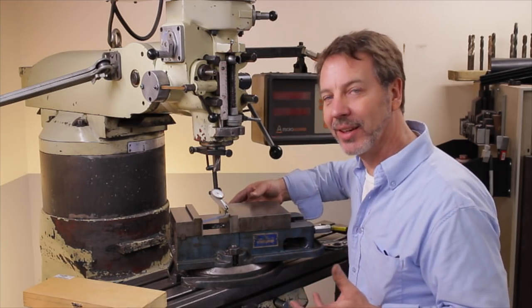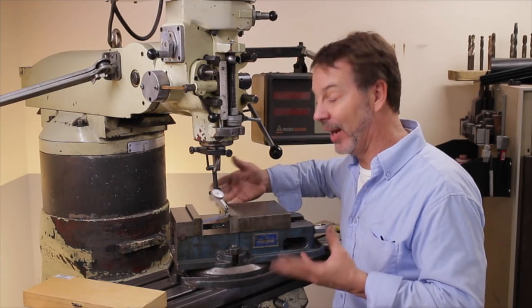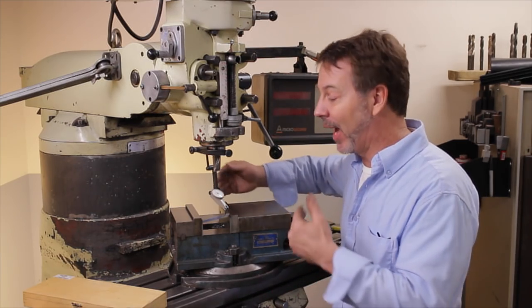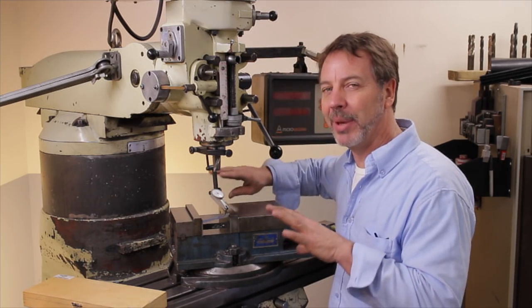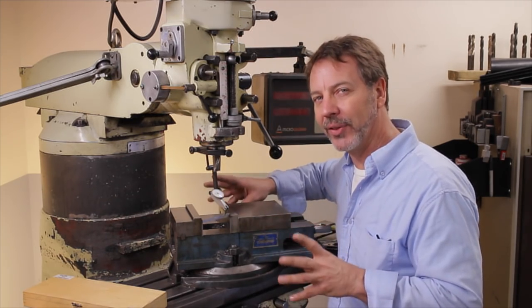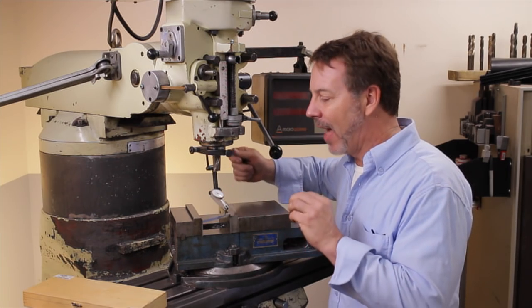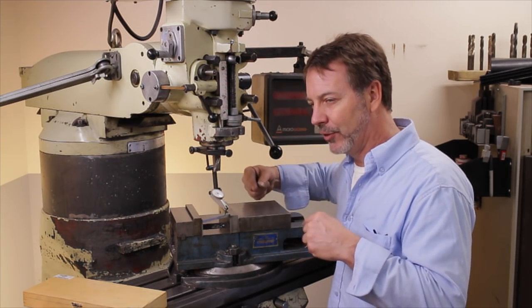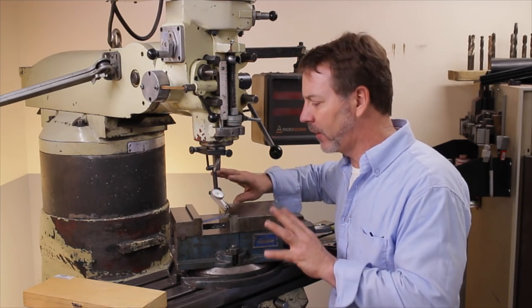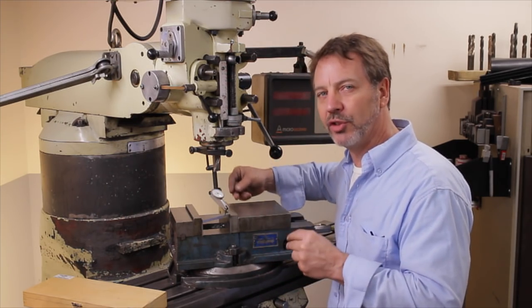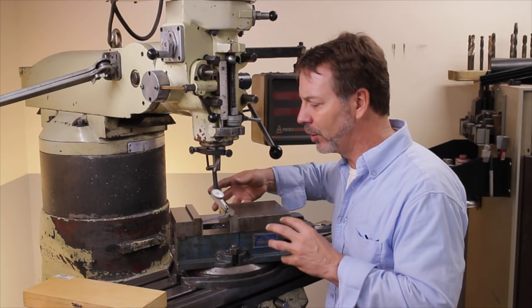So I hope you guys like this little tip and also the last one since they kind of build on each other, how to tram up a vise and also how to set the vise at an angle. Now this technique can be applied to all sorts of other things if you think about it. You did one on the lathe, exact same technique. What other machines need alignment that you can do this with?